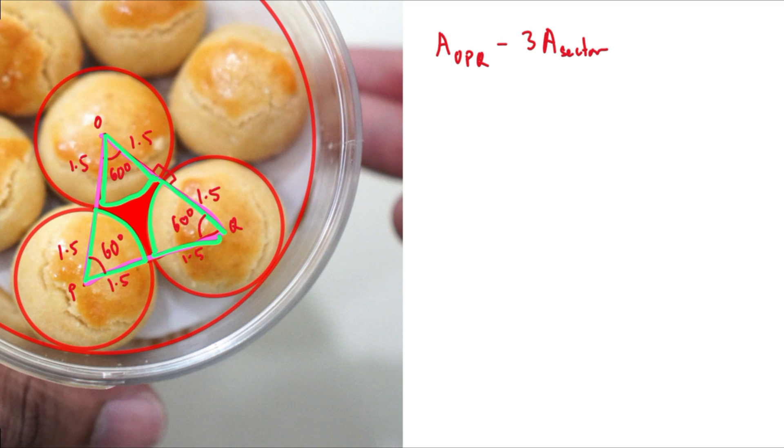So we can multiply three times the area of one sector. And so this will be equals to the area of a triangle, we can use the formula, half AB sine C. And we subtract three times the area of sector. Area of sector will be one over two R square theta.